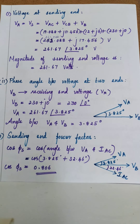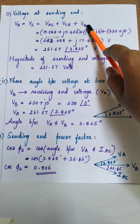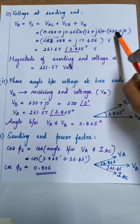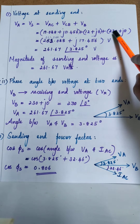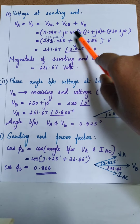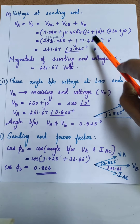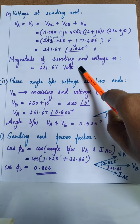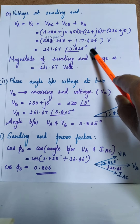The sending end voltage VA equals VAC plus VCB plus VB. Substituting VAC, VCB, and VB — the far end receiving end voltage is taken as the reference, so VB = 230∠0° = 230 + j0. When simplified, VA = 261.67∠3.825°. The magnitude alone is 261.67 volts. So the first part is done: voltage at the sending end is 261.67∠3.825°.